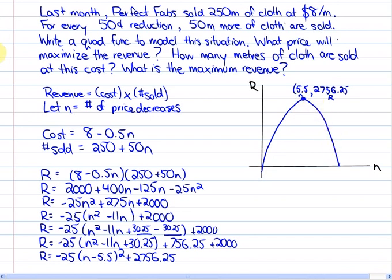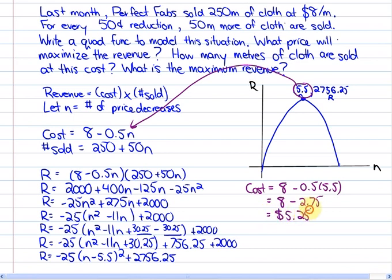Well, we need 5.5 price decreases. So, the cost will be 8 minus 0.5 times 5.5, which will be 8 minus 2.75, which is $5.25.